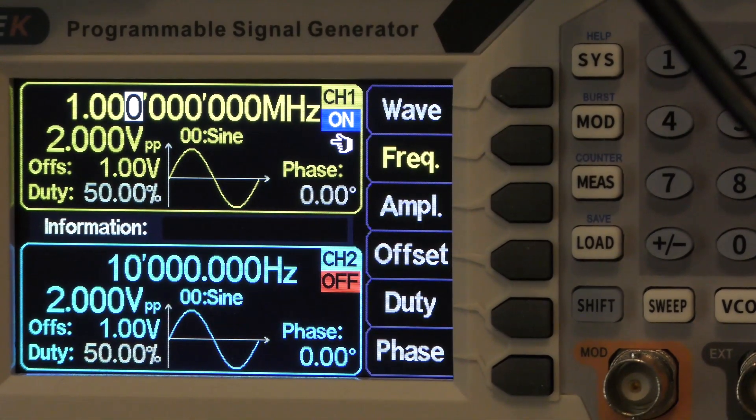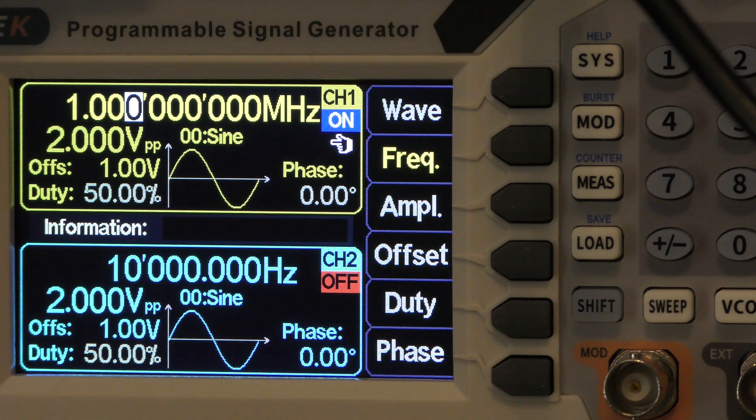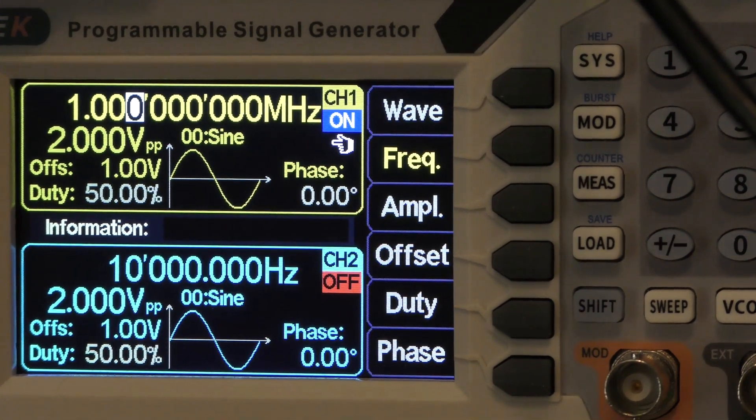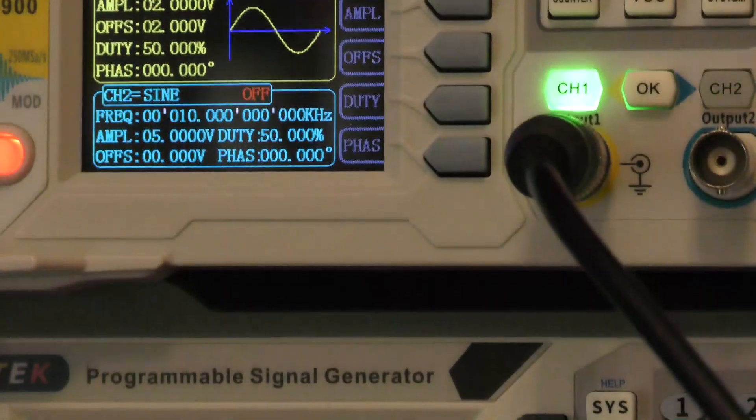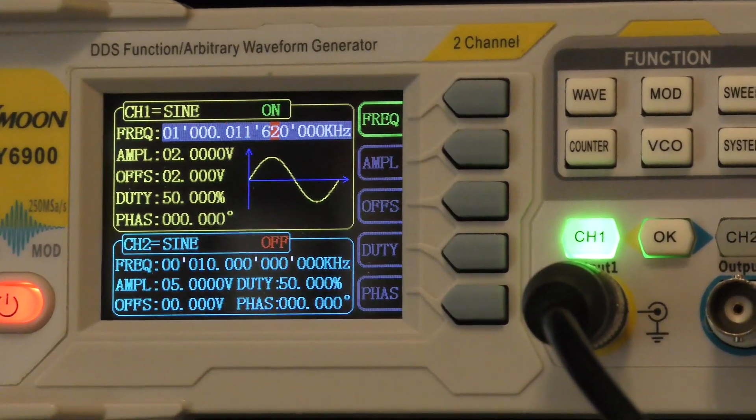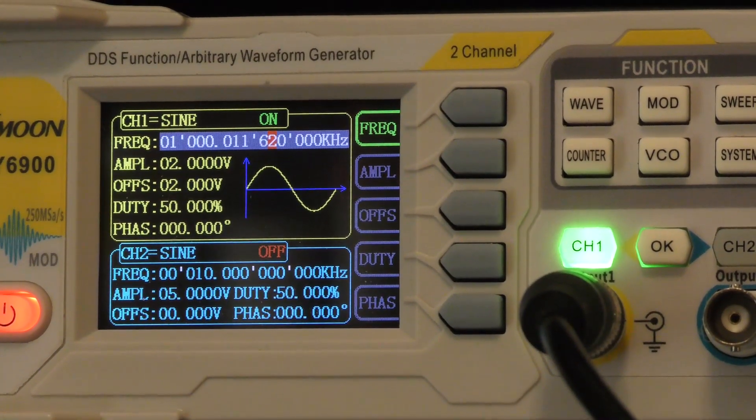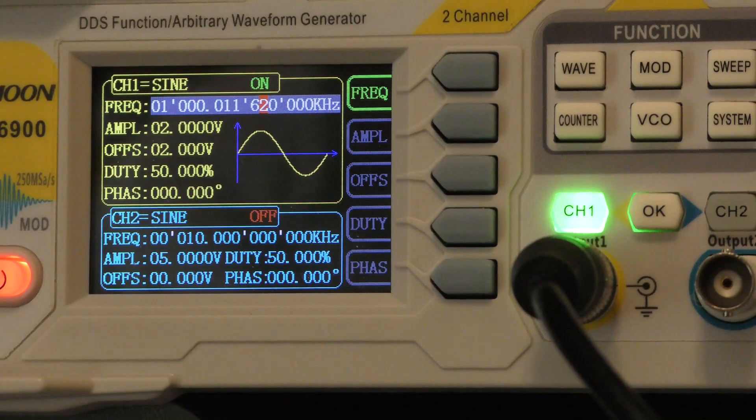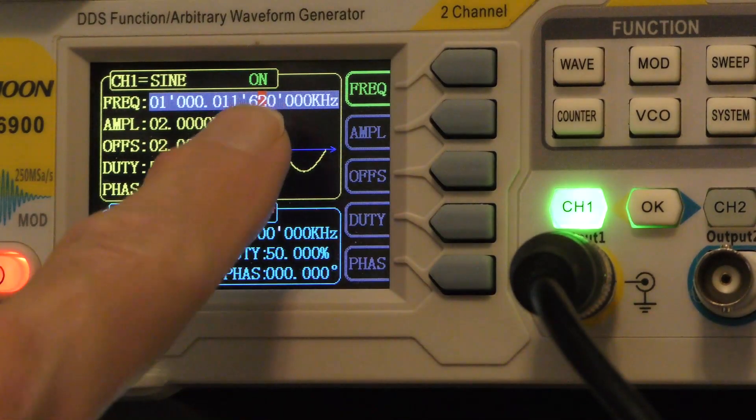I've been comparing the relative frequency stability of these two generators: the Juntech 9080 that you see on the screen here, and you notice I have it set to a megahertz, and then the FY6900, the KK Moon FY6900 up there. You may notice that I have that one set to a slight offset.